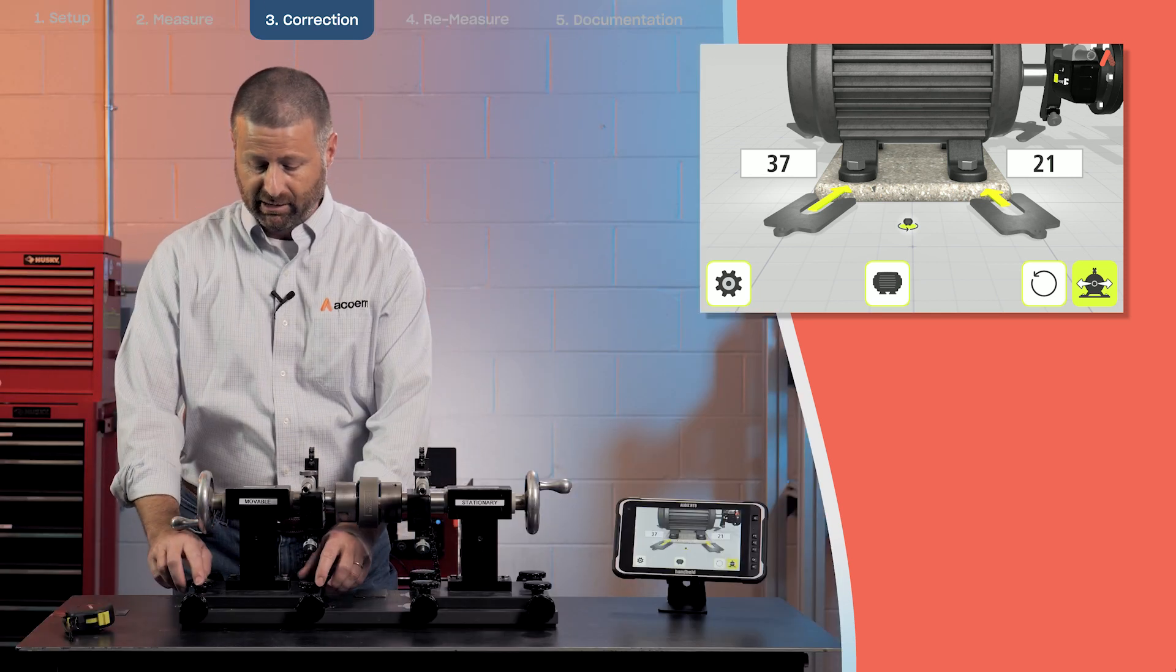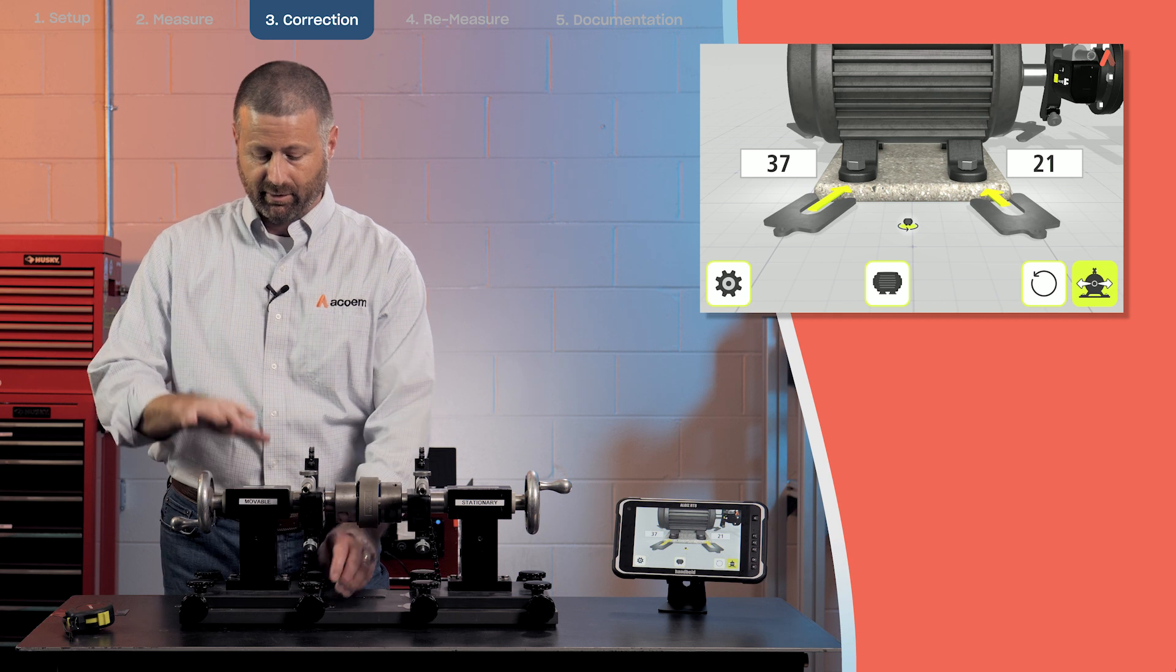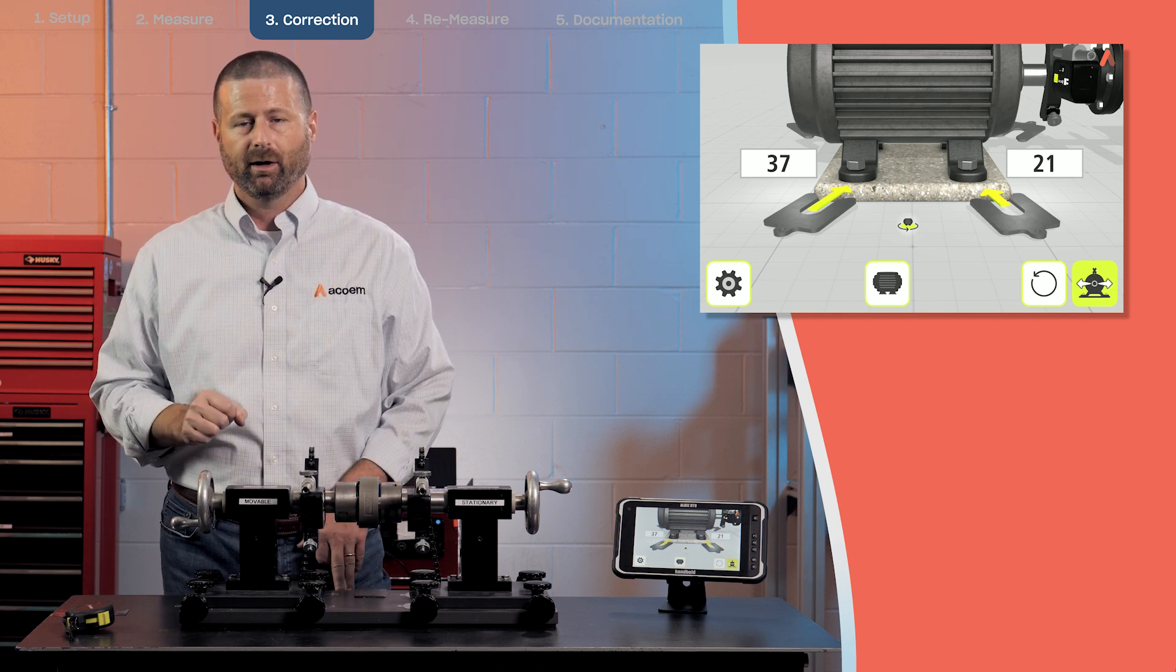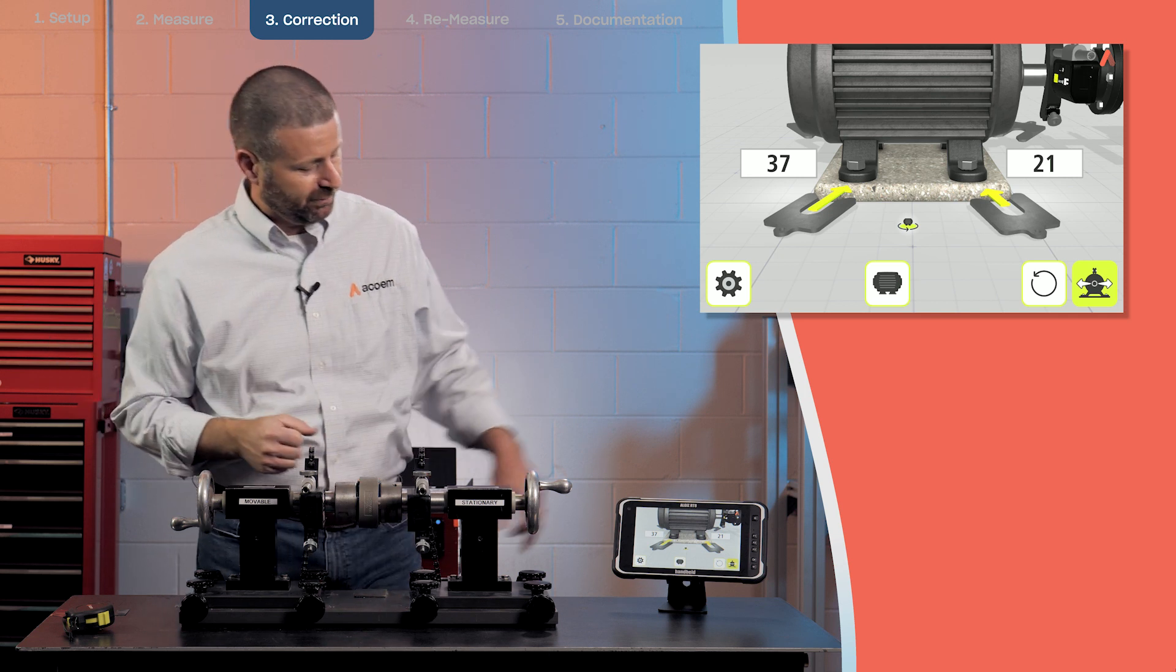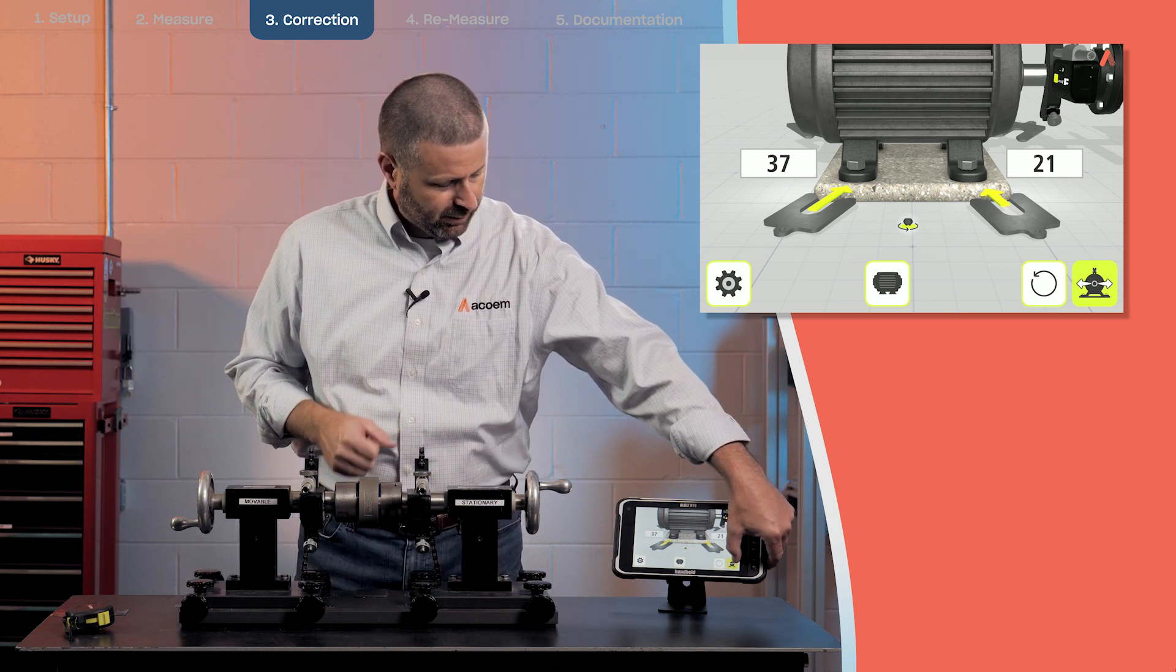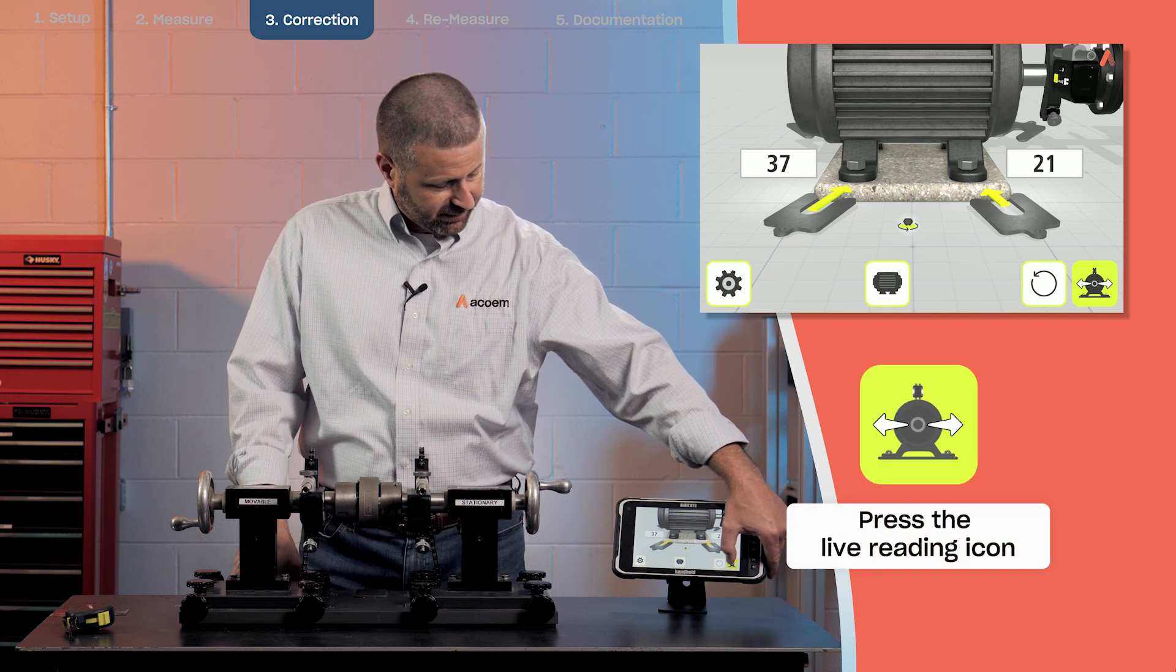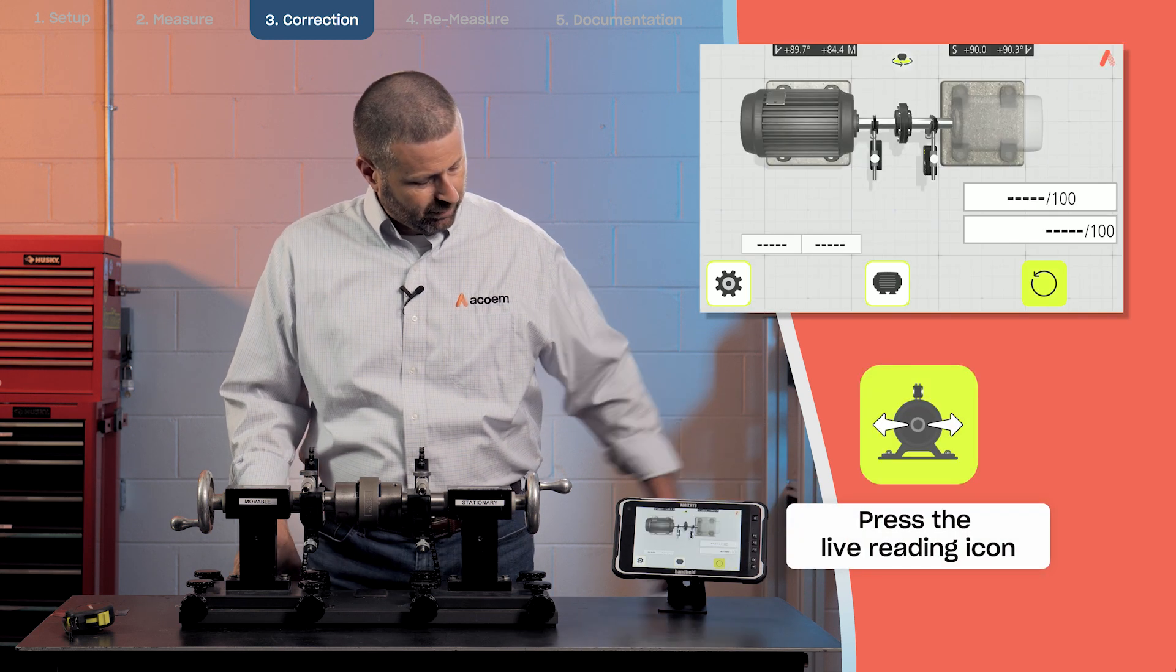Okay, so I am going to leave the movable machine loose at this point because I've done my vertical. I need to do my horizontal now. So again, here we have the green and glowing icon to indicate the next step is the horizontal.